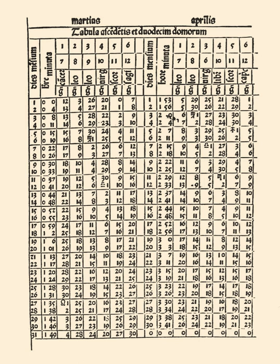13th century, the Zee I Ilkhani were compiled at the Marica Observatory in Persia. 13th century, the Alfonsine Tables were compiled in Spain to correct anomalies in the Tables of Toledo, remaining the Standard European Ephemeris until the Prutenic Tables almost 300 years later.